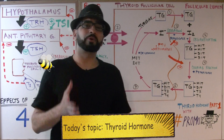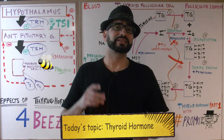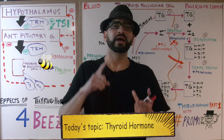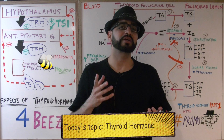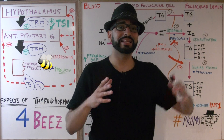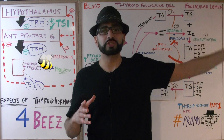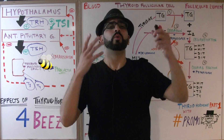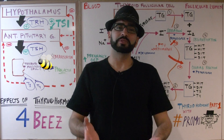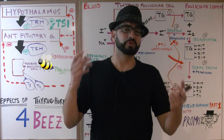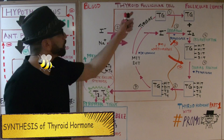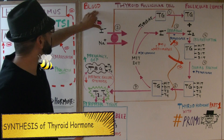In Part 1, we're going to discuss the synthesis, followed by the regulation, and followed by the effects of what the thyroid hormone has on the body. Then next week we're going to talk about the pathological forms — what happens when we have too little thyroid hormone and what happens when we have too much.